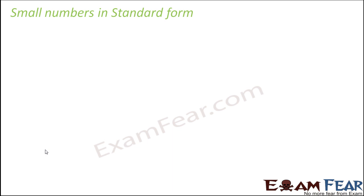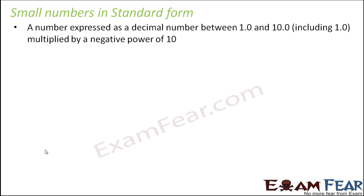In a similar way, when we want to represent small numbers in standard form, the logic remains the same — we still represent the number as a decimal number between 1 and 10, and then multiply it by a negative power of 10. That is the only difference: this time you will have a negative power of 10.